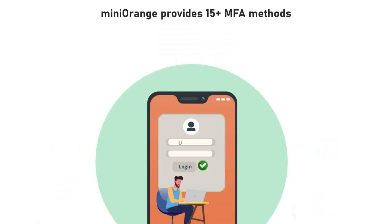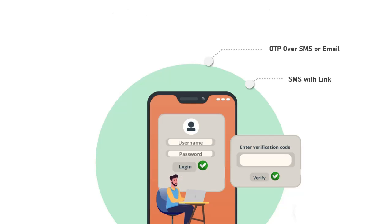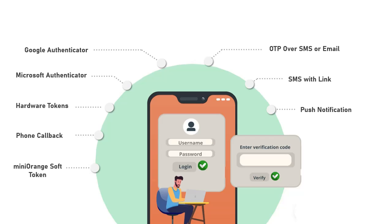Mini Orange provides 15 plus MFA methods like OTP over SMS or email, SMS with link, push notifications, Google Authenticator, Microsoft Authenticator, hardware tokens, phone callback, Mini Orange soft token, and many more.